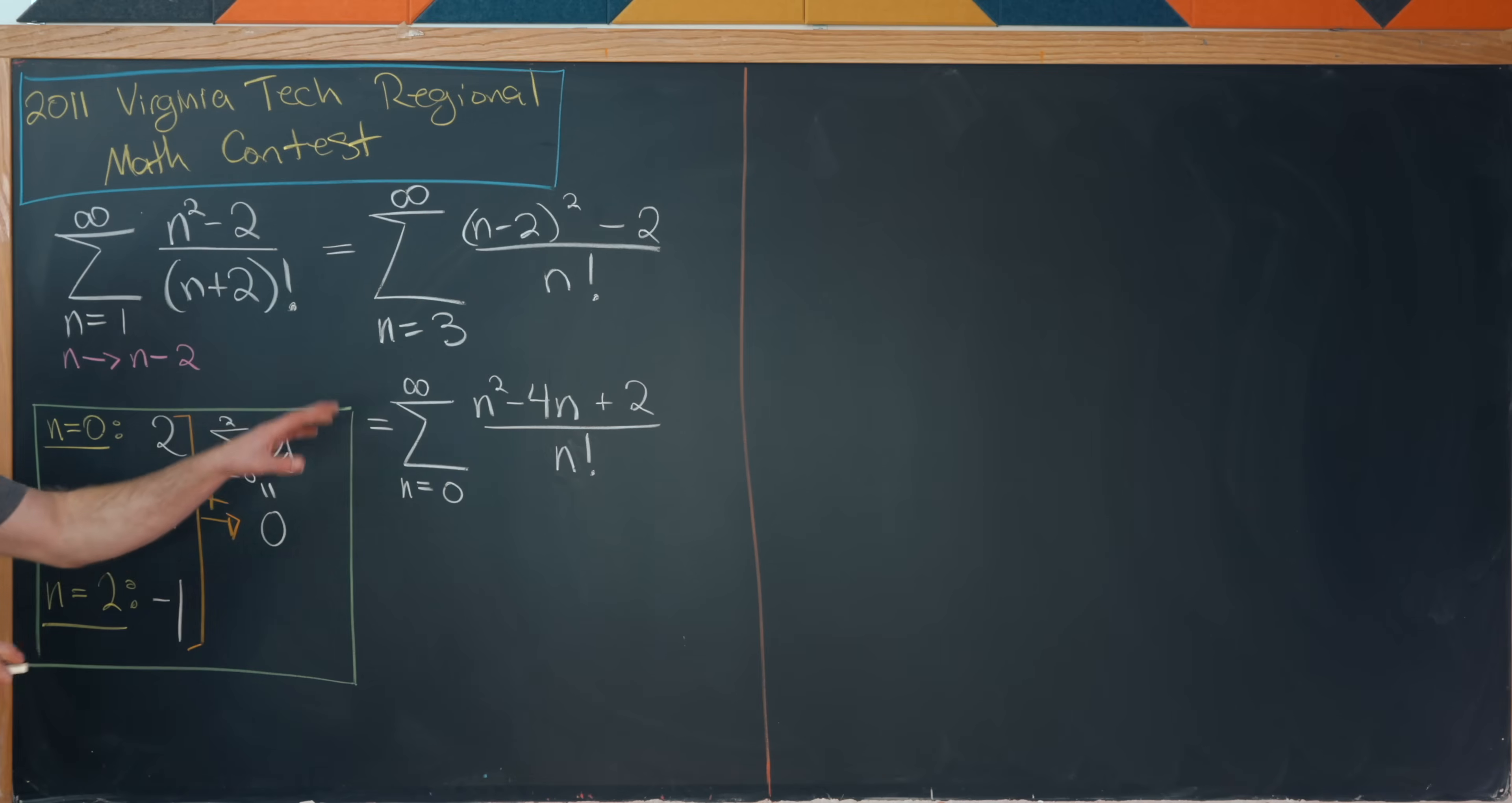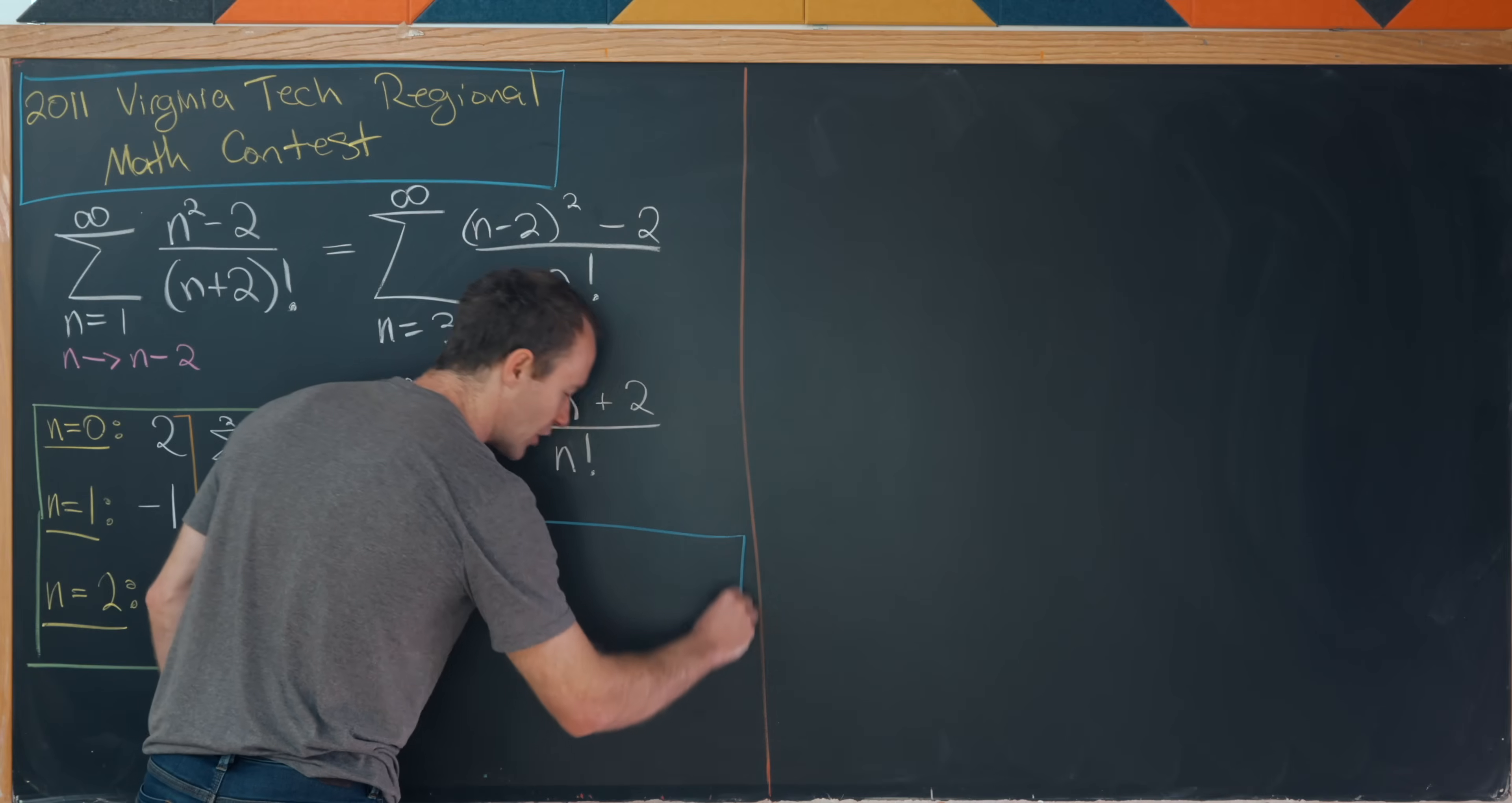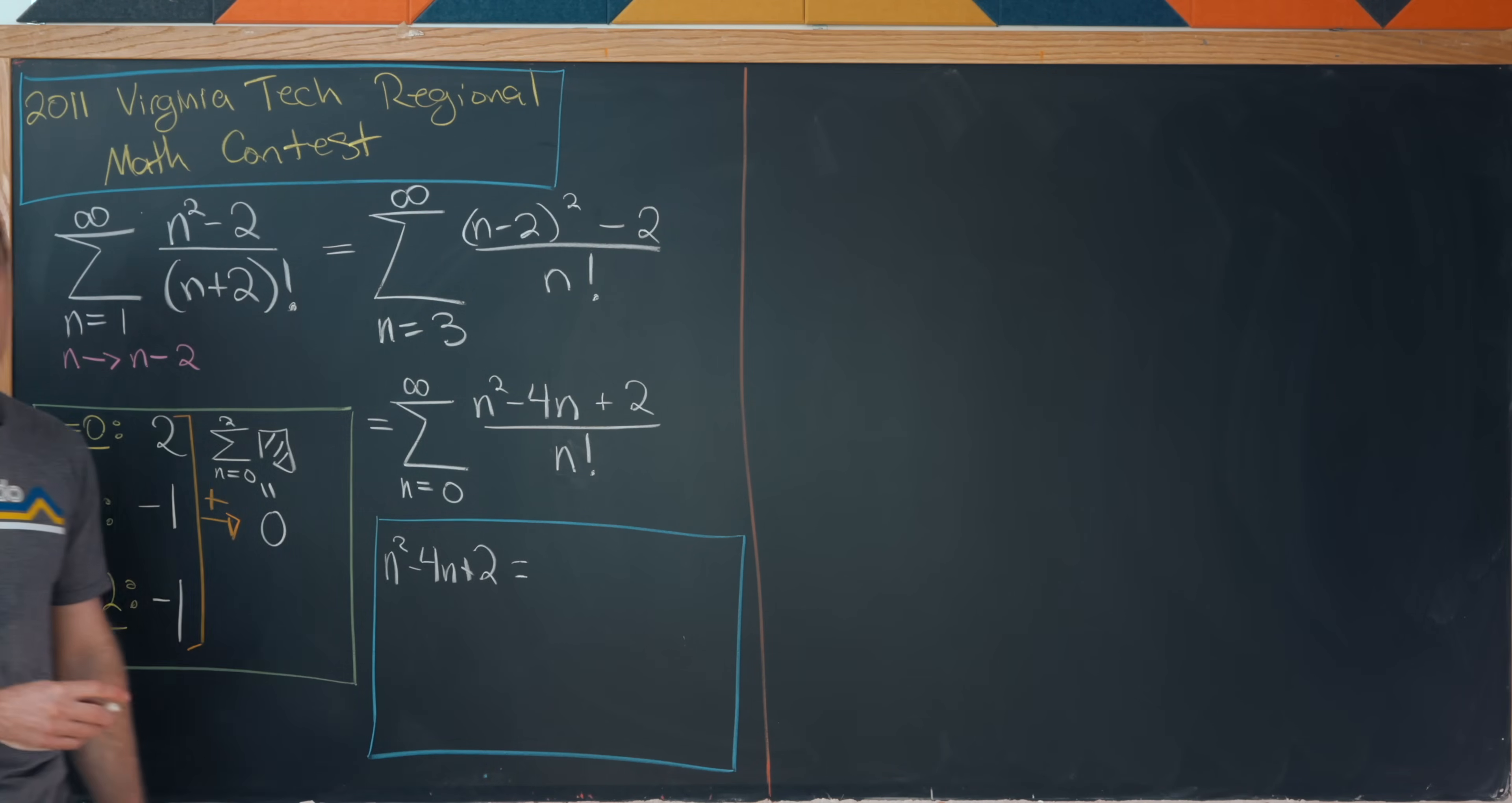And now we need to cleverly rewrite this so it looks like some well-known sums. And I guess probably the well-known sum that's lurking here is the sum of the reciprocal of the factorials, which is of course, the special number E, Euler's constant E. So how can we get there? Well, I would perhaps take this numerator n squared minus four n plus two, and I would rewrite it as follows.